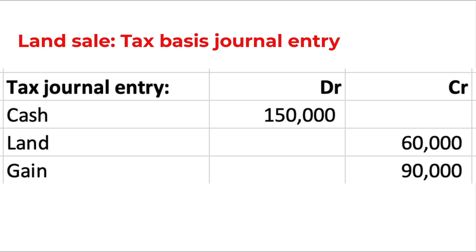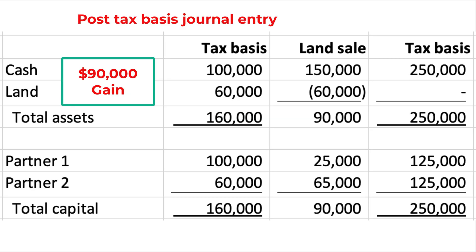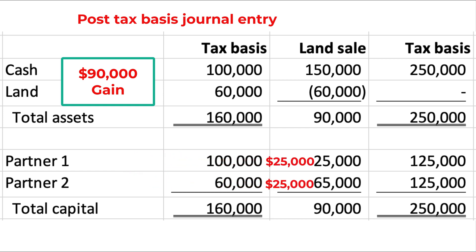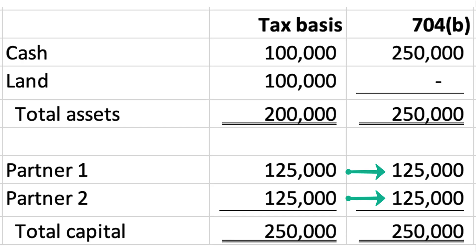704C requires us to allocate the $90,000 tax gain so as to reduce the difference between the partners' tax basis and fair market value basis in the assets. The regulations let us use any reasonable method, and they offer three safe harbor methods. It doesn't take much imagination to see that the first $40,000 of tax gain should go to Partner 2, and the remaining $50,000 of tax gain should be evenly split per the partnership agreement. In the end, both partners' tax basis capital accounts are equal to their 704B capital accounts — which is the goal of Section 704C.